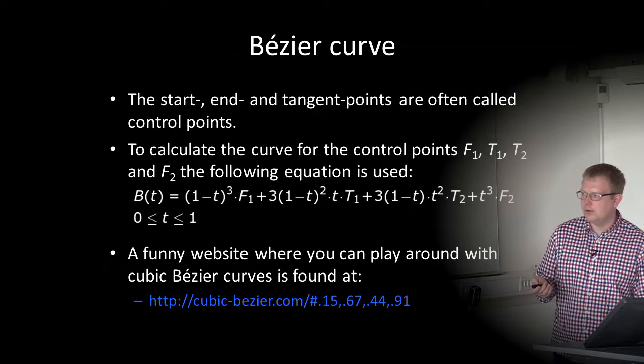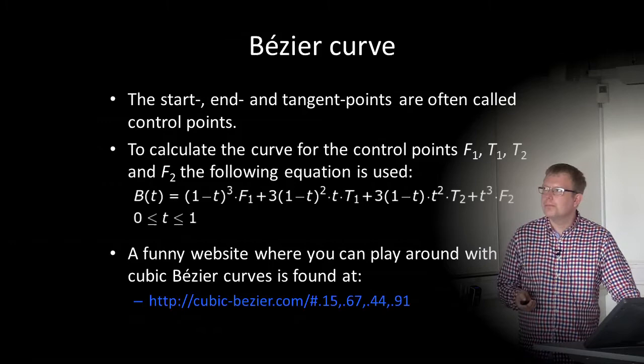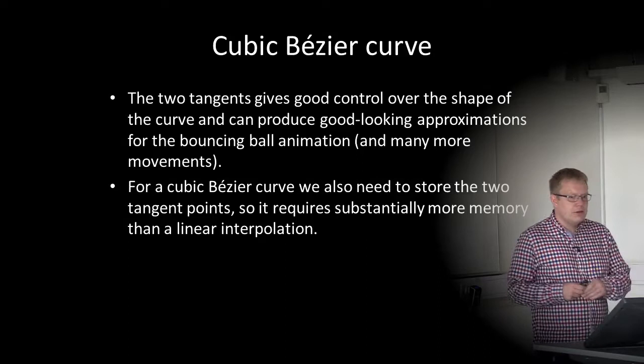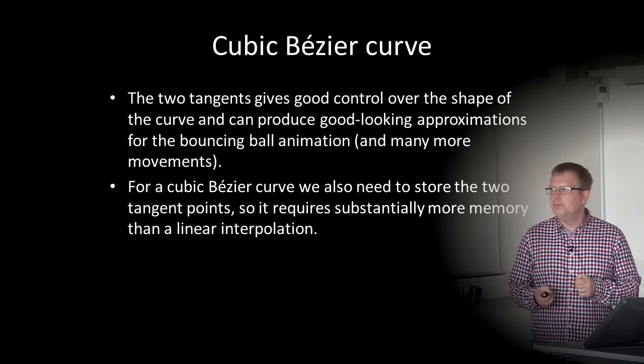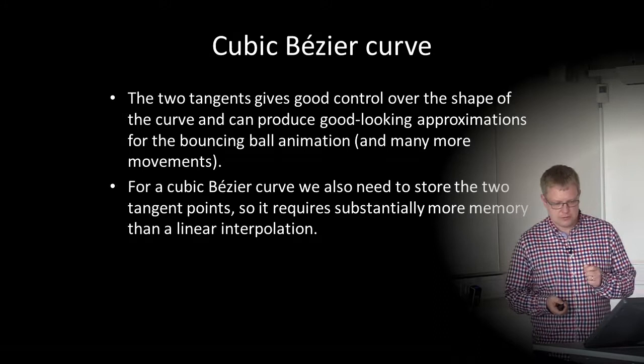There is a website where you can play around with different cubic Bézier curves. The two tangents give good control over the shape of the curve and can produce good-looking approximations — for example, the bouncing ball animation, smooth camera movements, and similar. For a cubic Bézier curve, we also need to store the two tangent points, so it requires substantially more memory than linear interpolation.